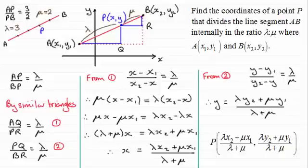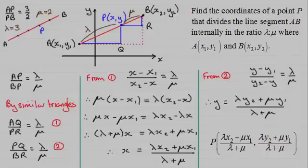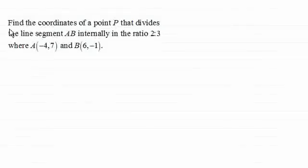Now I've got an example that I'd like to just run through with you to demonstrate this idea, which you might like to have a go at before I give you the answer. And here it is. We've got to find the coordinates of a point P that divides the line segment AB internally in the ratio 2 to 3, where A has coordinates (-4, 7) and B has coordinates (6, -1). So do pause the video and have a go at this.